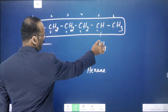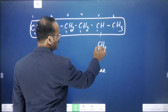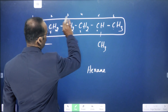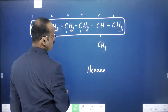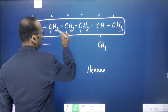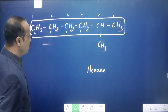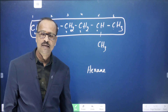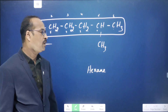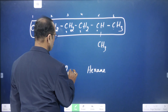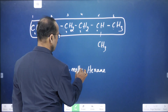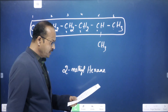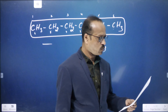Here you see there is one branch. This branch CH3 is called methyl. If you count from one end, methyl is attached to the fifth carbon. From the other end, it is attached to the second carbon. So we take the lowest number: 2-methylhexane. Very good — 2-methylhexane.